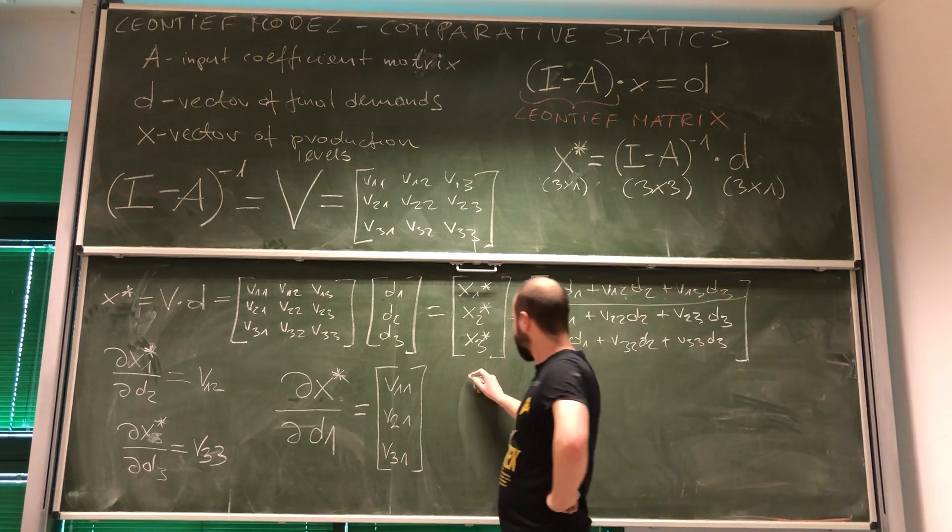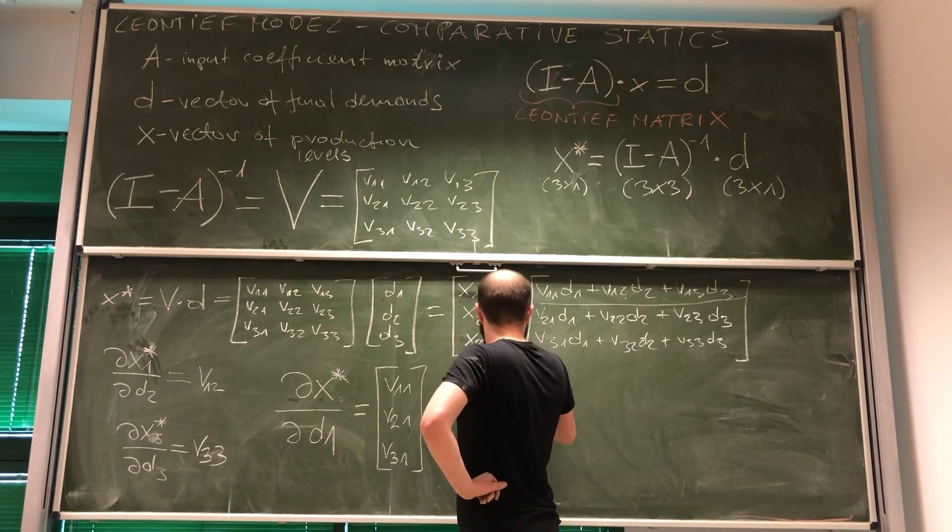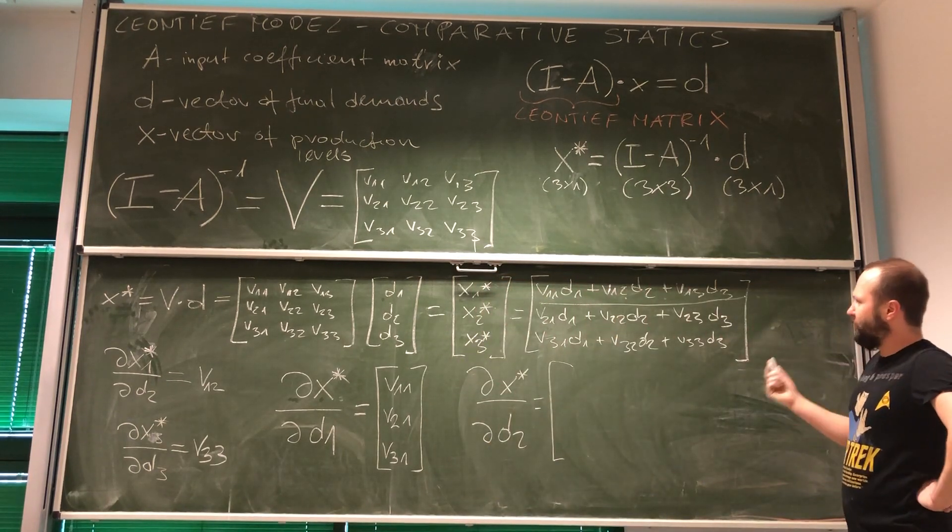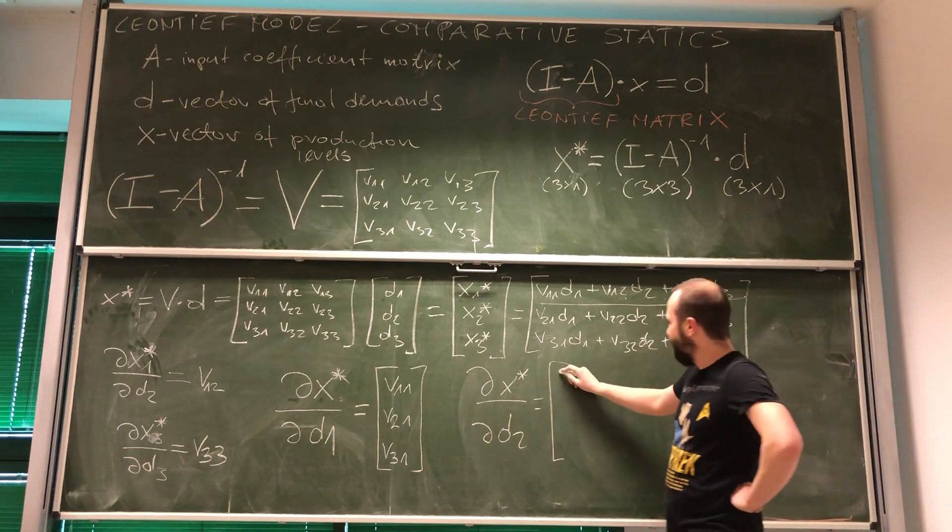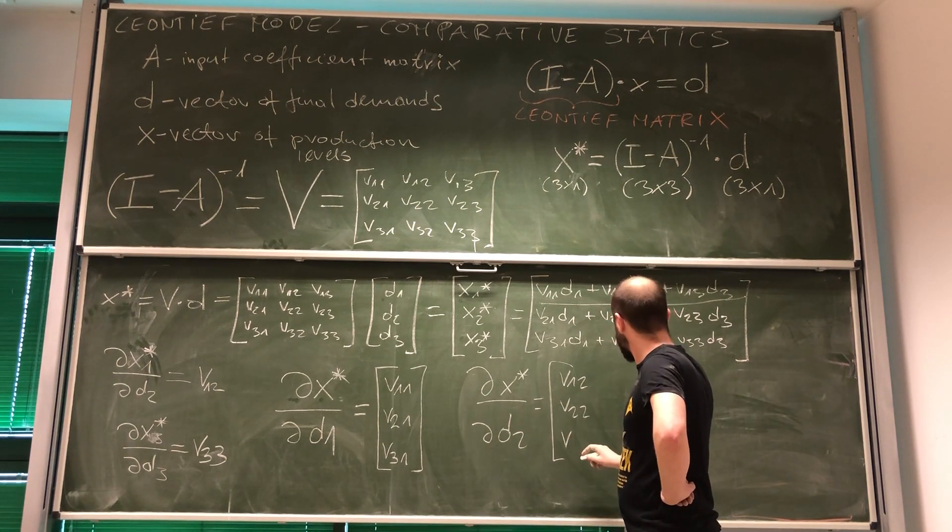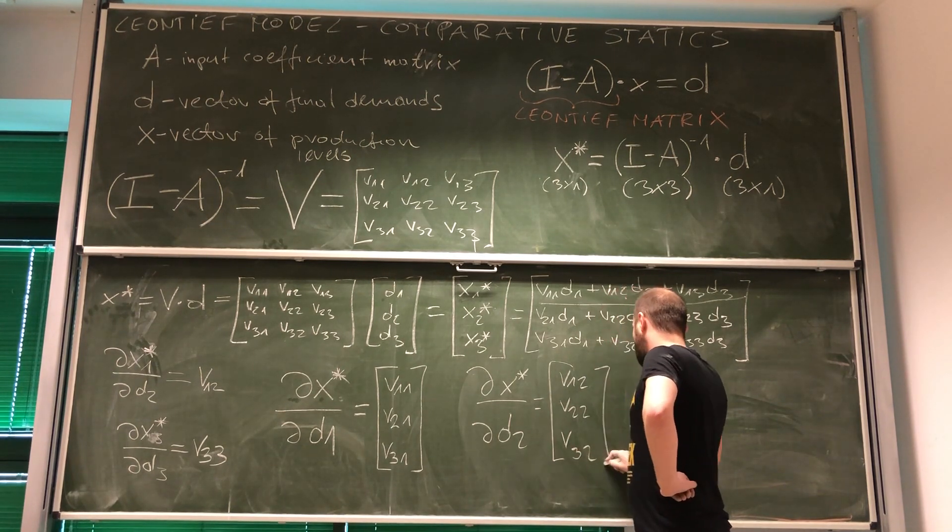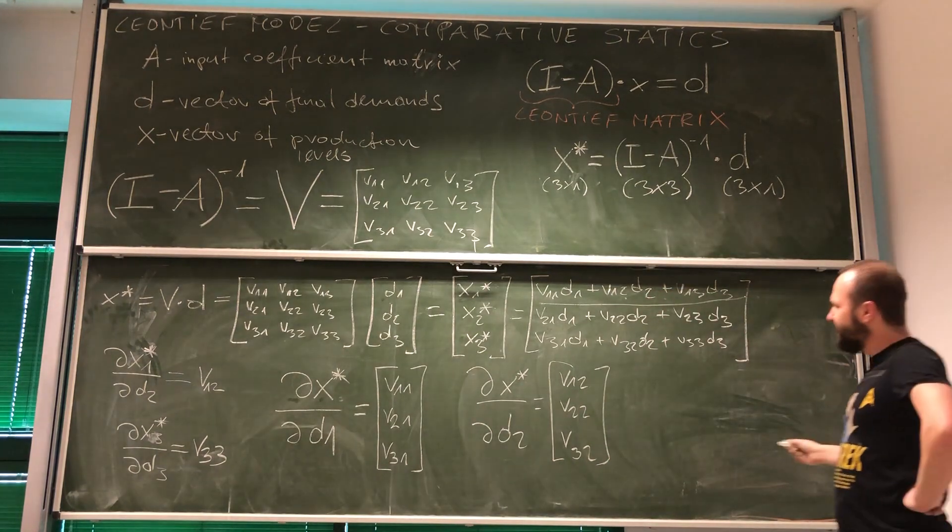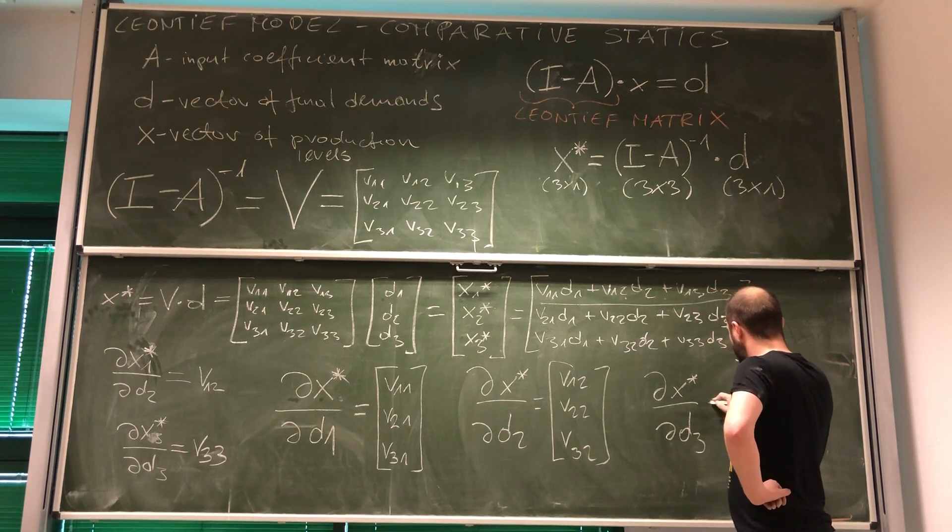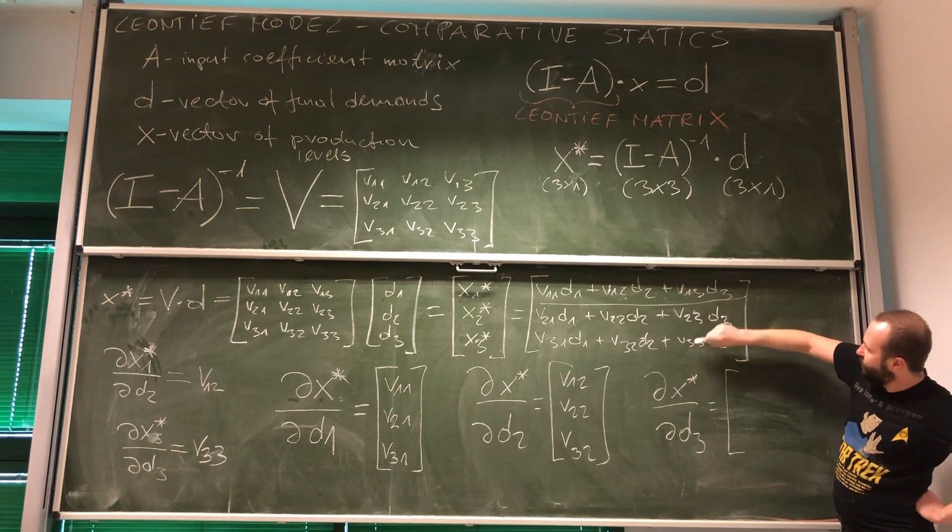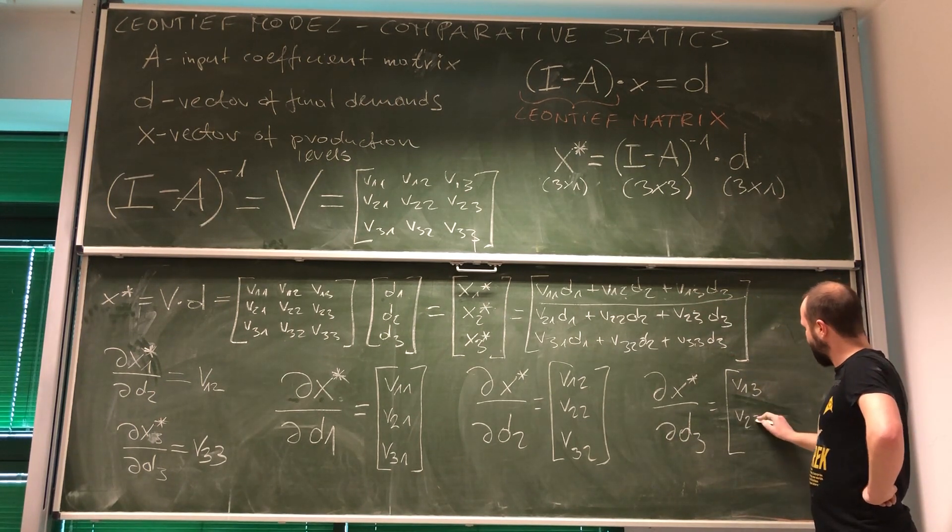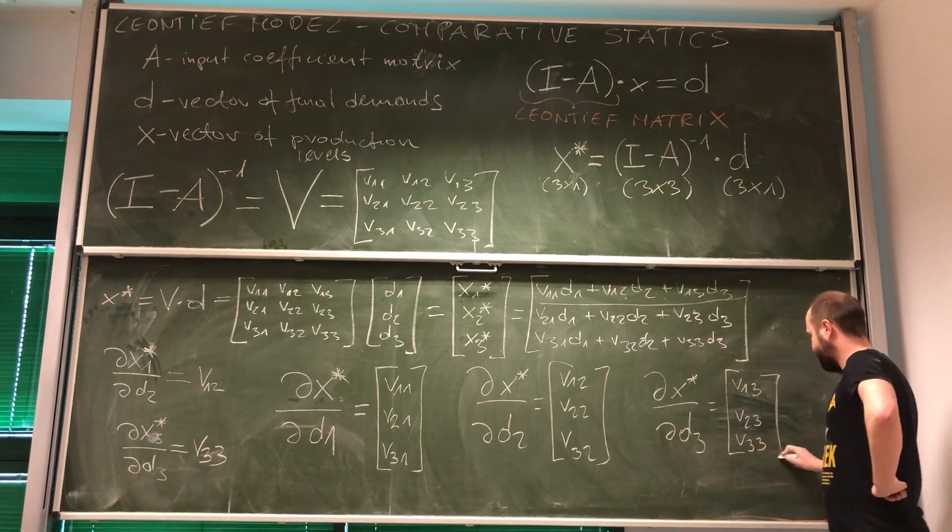What if I'm going to do this with respect to vector D2? Well, again, it's relatively easy thing to do. You will have V1 2, V2 2 and V3 2. So we can clearly see that if I'm going to now differentiate this with respect to D3, all I need to have is to put those coefficients, V1 3, V2 3, V3 3.